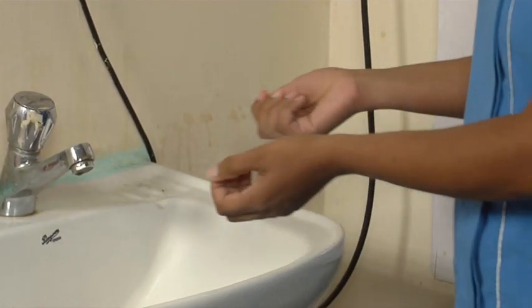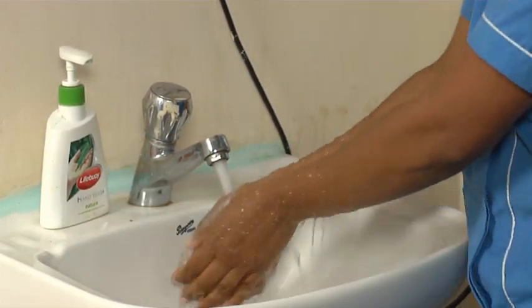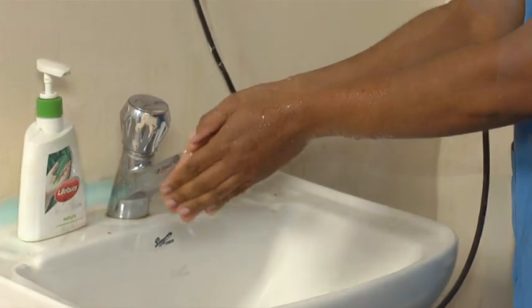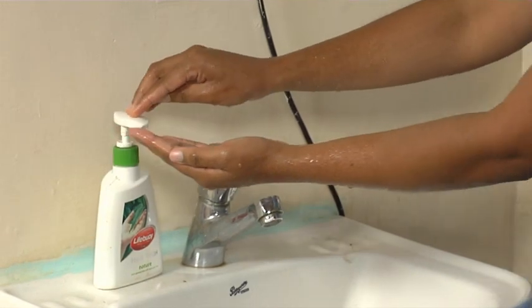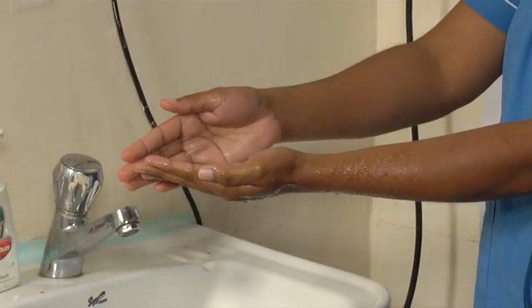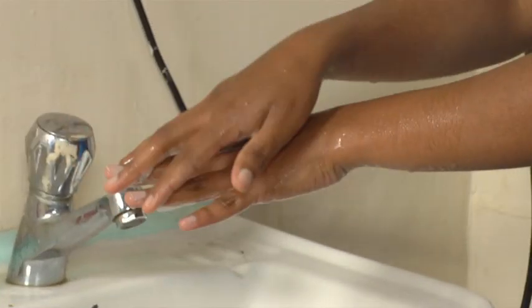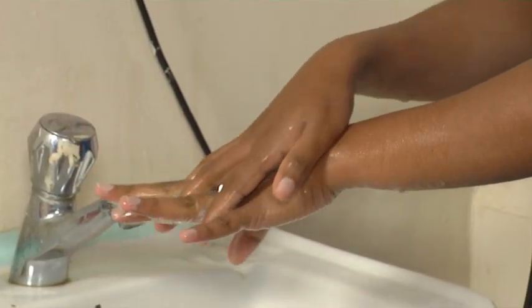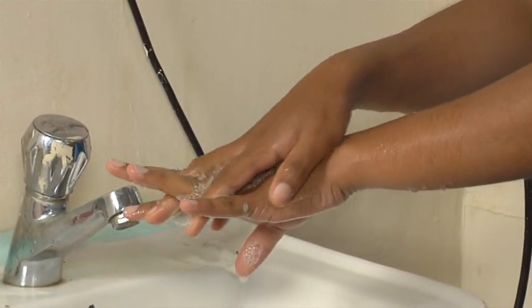Wet your hands, using the foot valve to turn on the water flow. Take care to wet your wrists and forearms as well. Then, take enough of the cleaning solution into one of your palms. First, start by rubbing your palms against each other. Then, one hand over the other hand with fingers interlocking. Clean each hand separately in this manner.